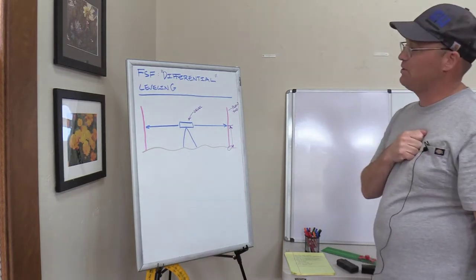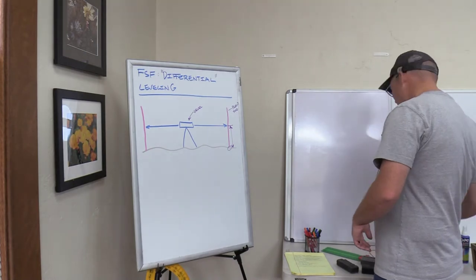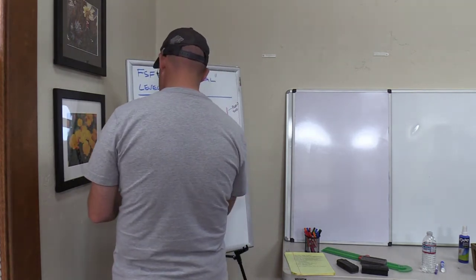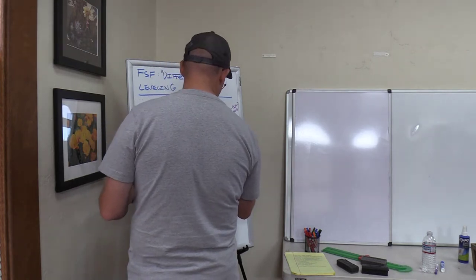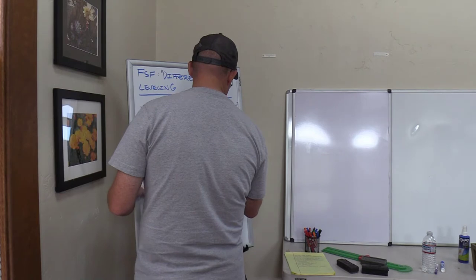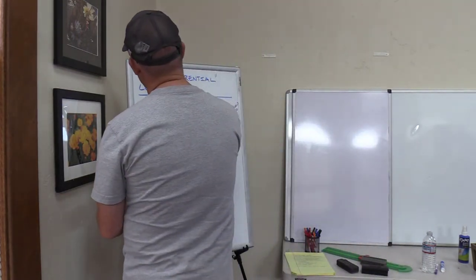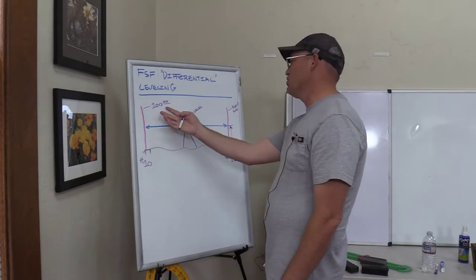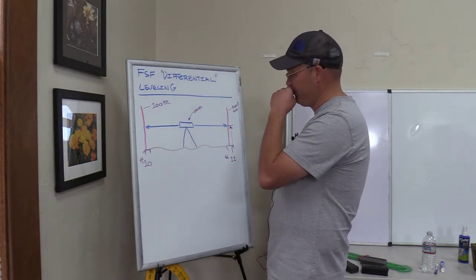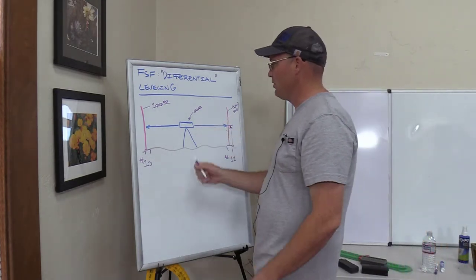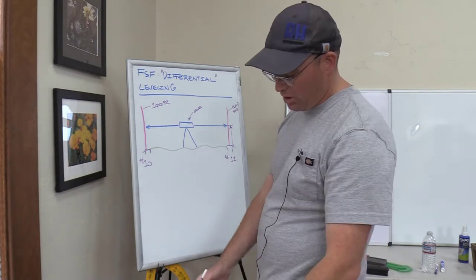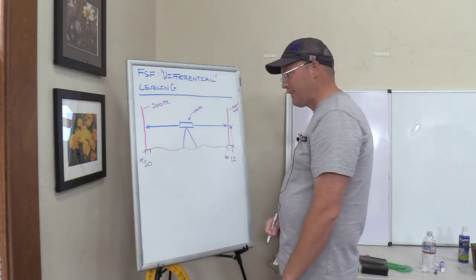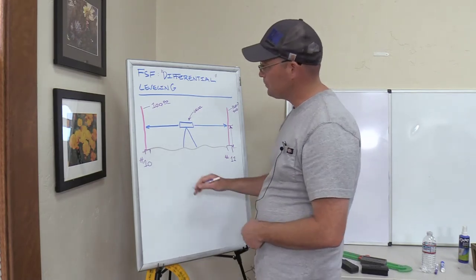So how do you transfer an elevation with a level? We have two points here on the ground — we'll call them point 10 and point 11. We'll say they're control points, rebars and caps. We know the elevation at point 10 is 100 feet even, and we want to get a good leveled elevation over to point number 11. We set up the level — you don't have to set it up over a control point because we're not worried about horizontal, only vertical or elevation. You just set your level up somewhere between 10 and 11, and get it nice and level.